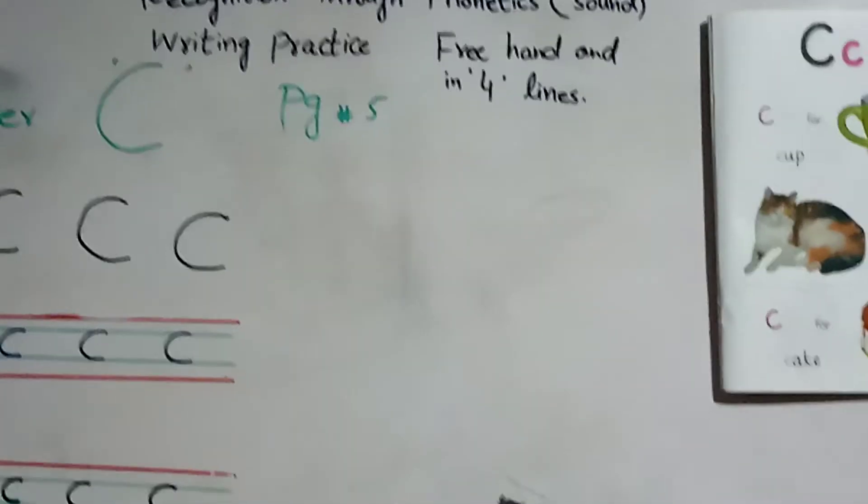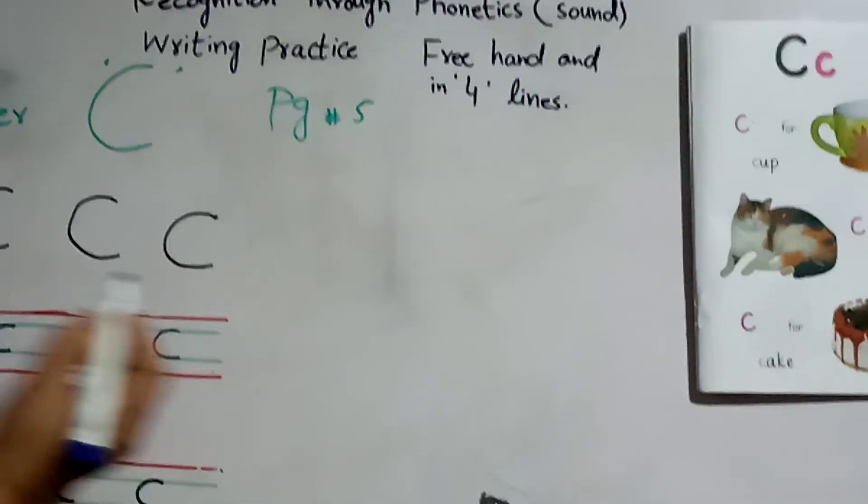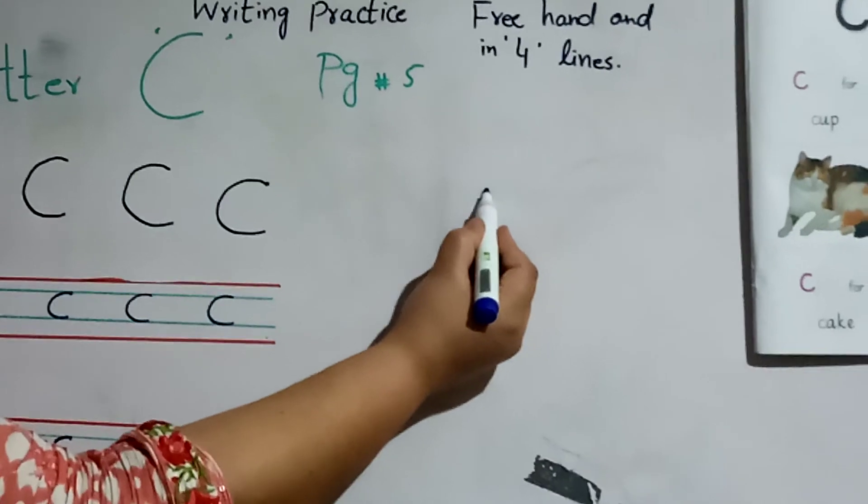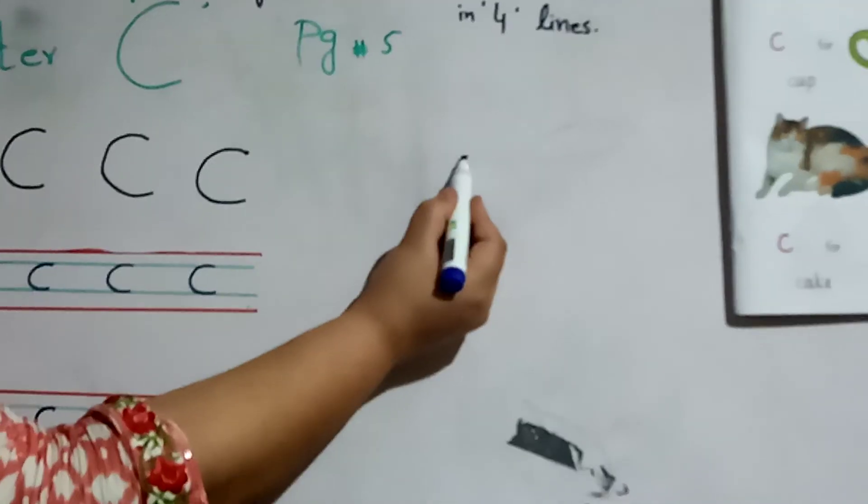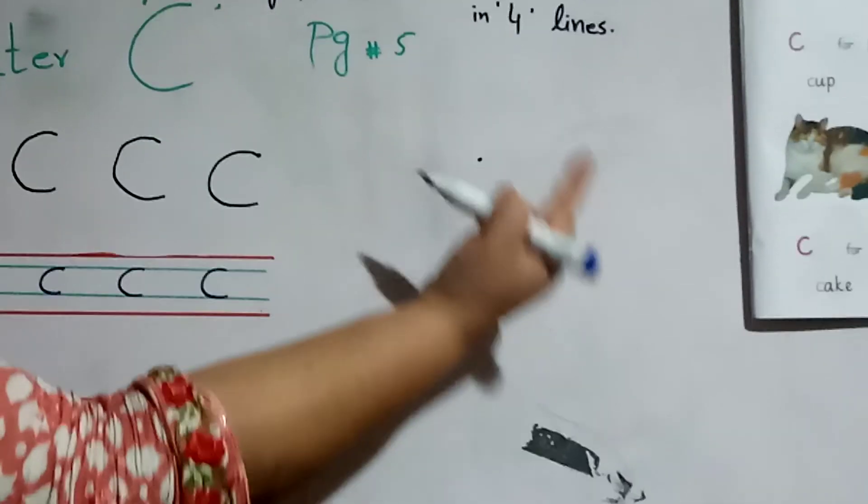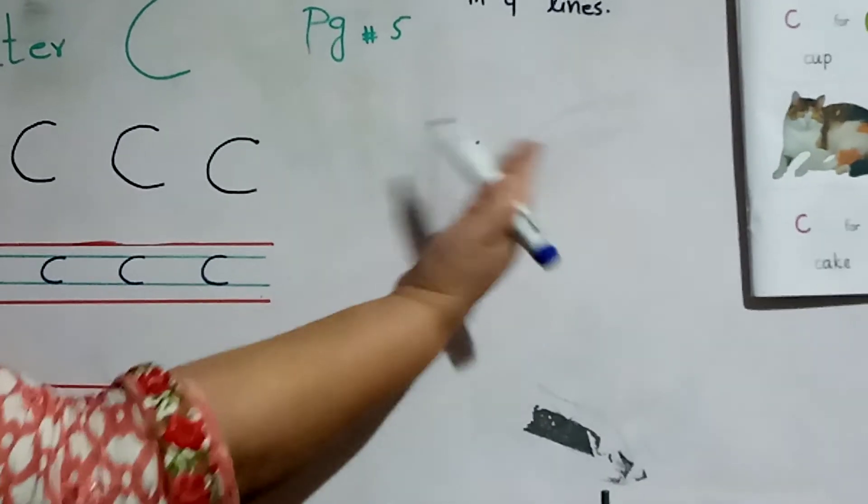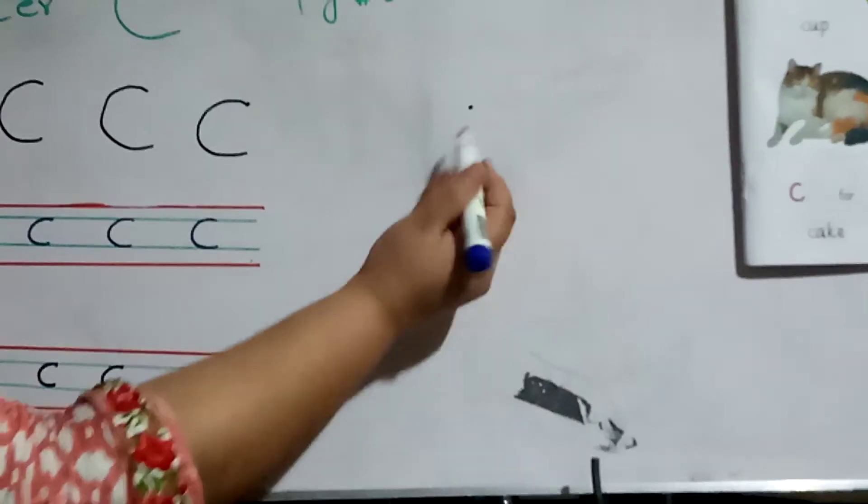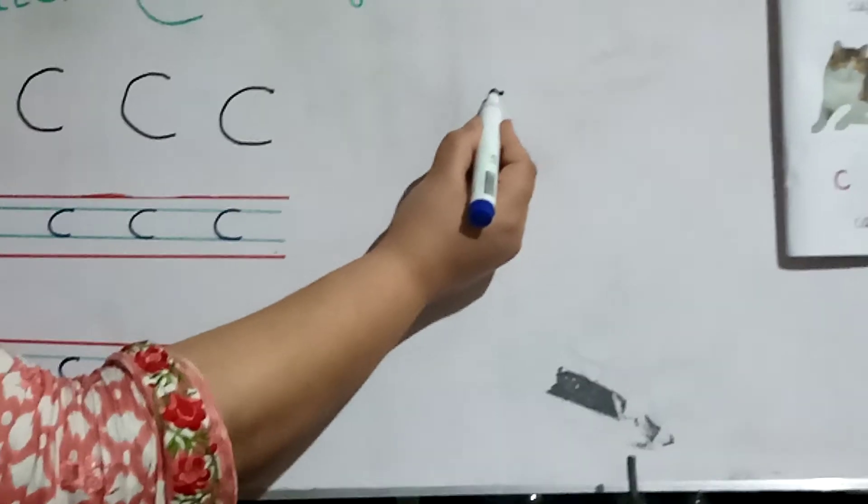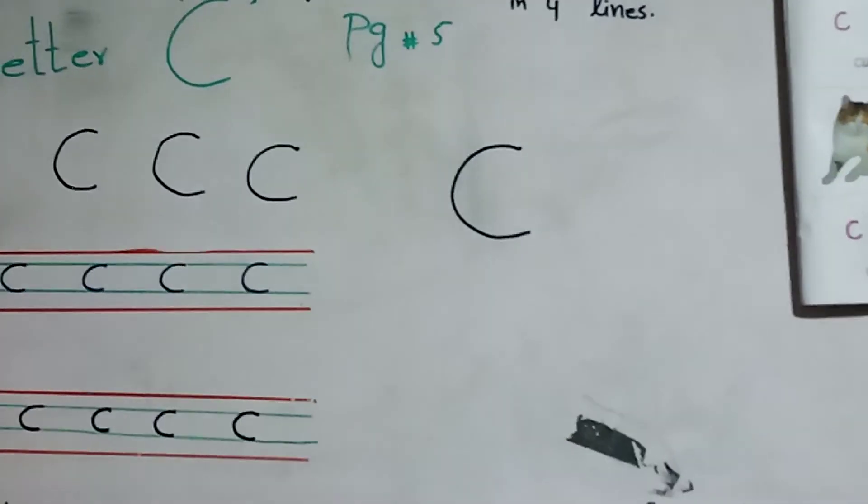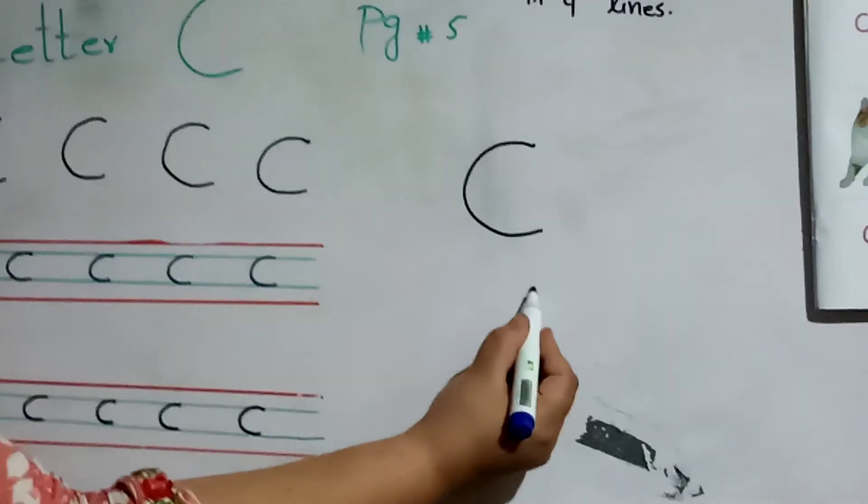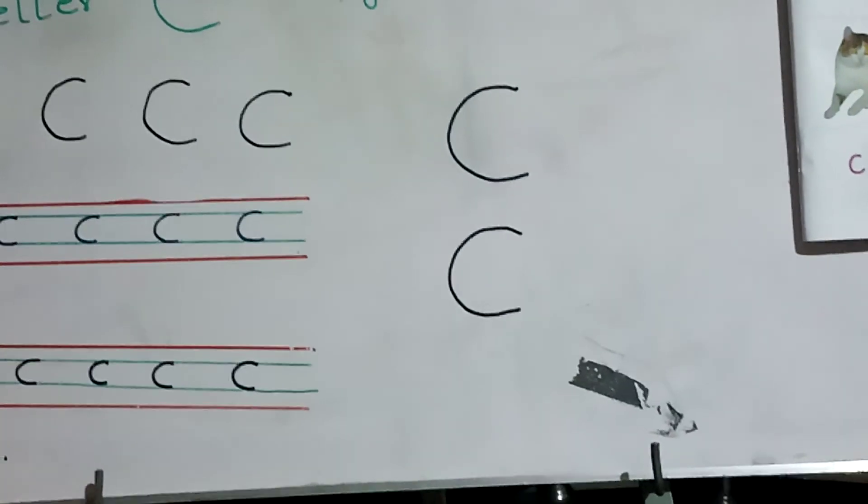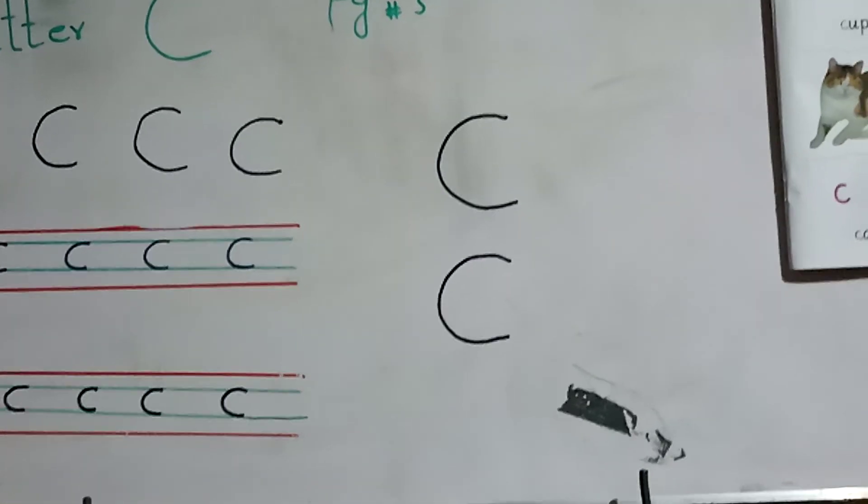Once again, I am telling you how you will write the letter C. Start from here and write in this way, write like this, like this. C-C, make a curve, C. It's your letter C. It's your letter C.